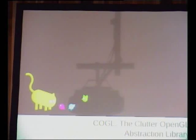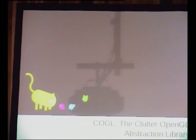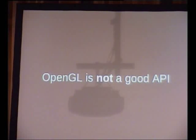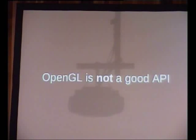How Clutter works underneath: Clutter uses OpenGL for hardware acceleration. But as we all know, OpenGL is not a good API — it sucks. It's a massive flat namespace and everything that could have possibly been misdesigned was misdesigned. It was meant to be used by CAD applications, and it shows really badly.